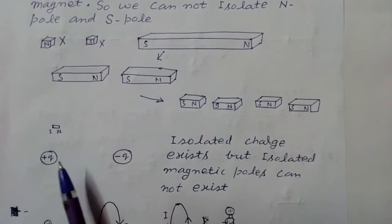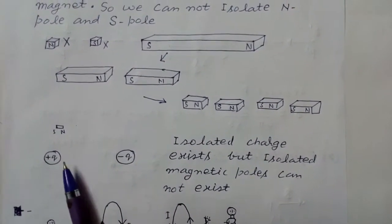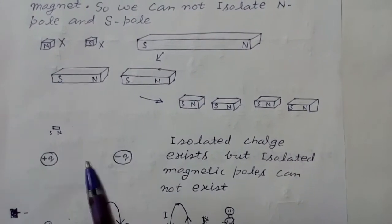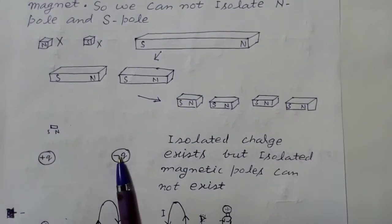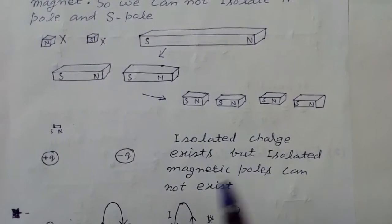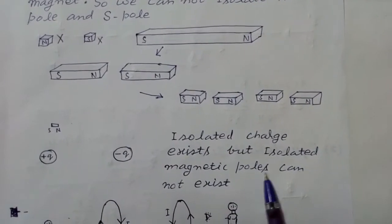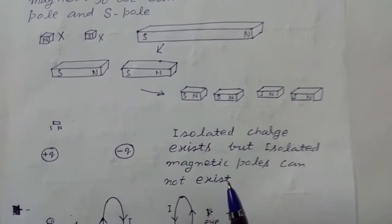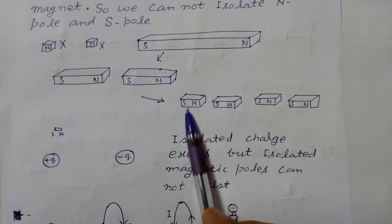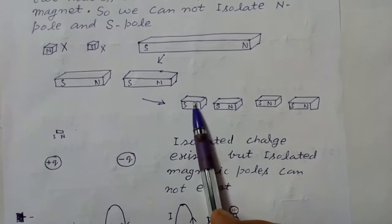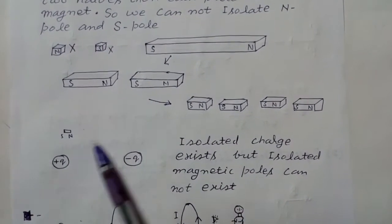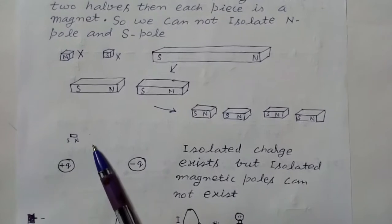We know that a positive charge +q and a negative charge -q can exist separately, so isolated charge exists. But isolated magnetic poles cannot exist. If you further break these pieces, even the smallest particle will also be a magnet.